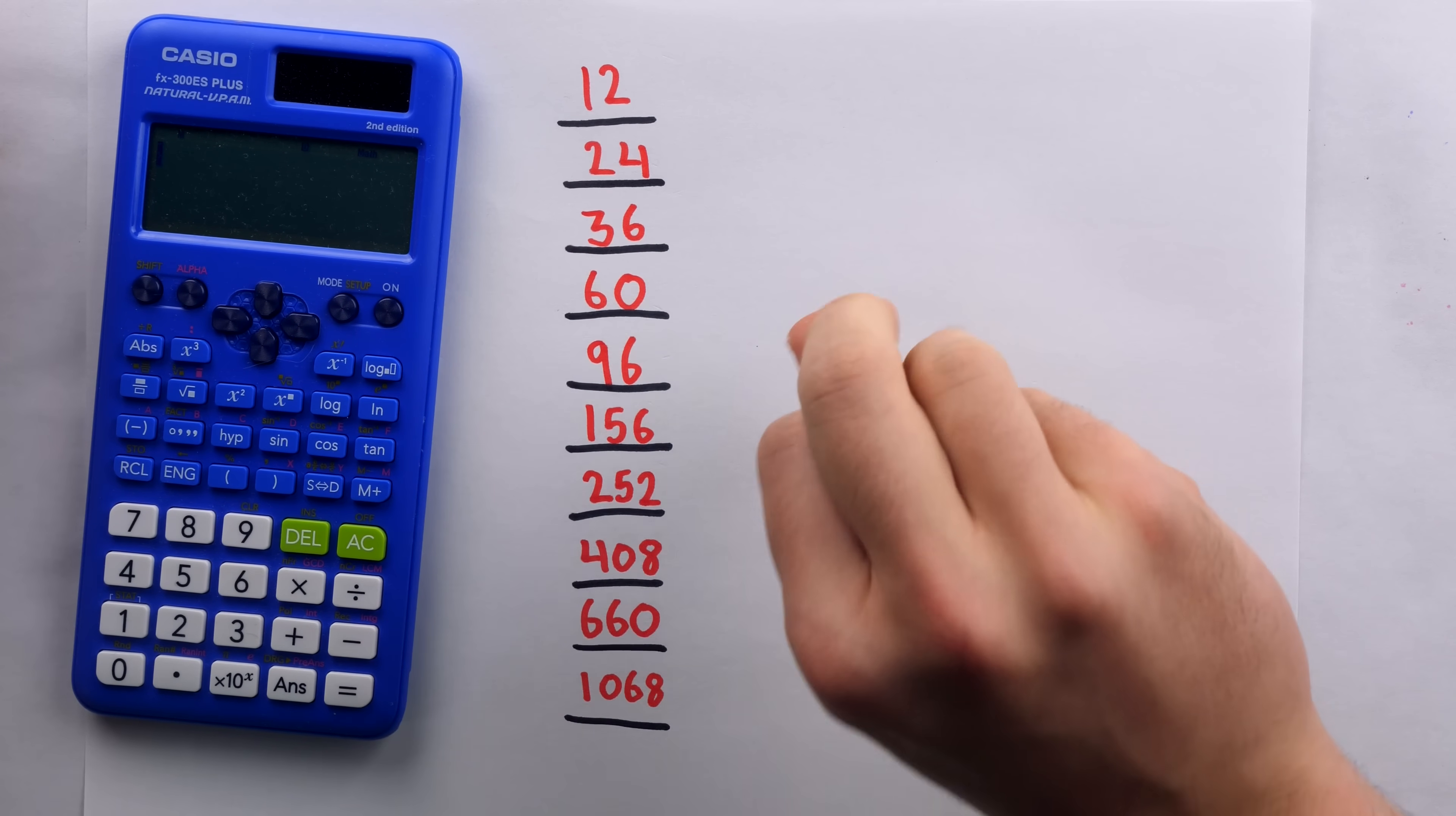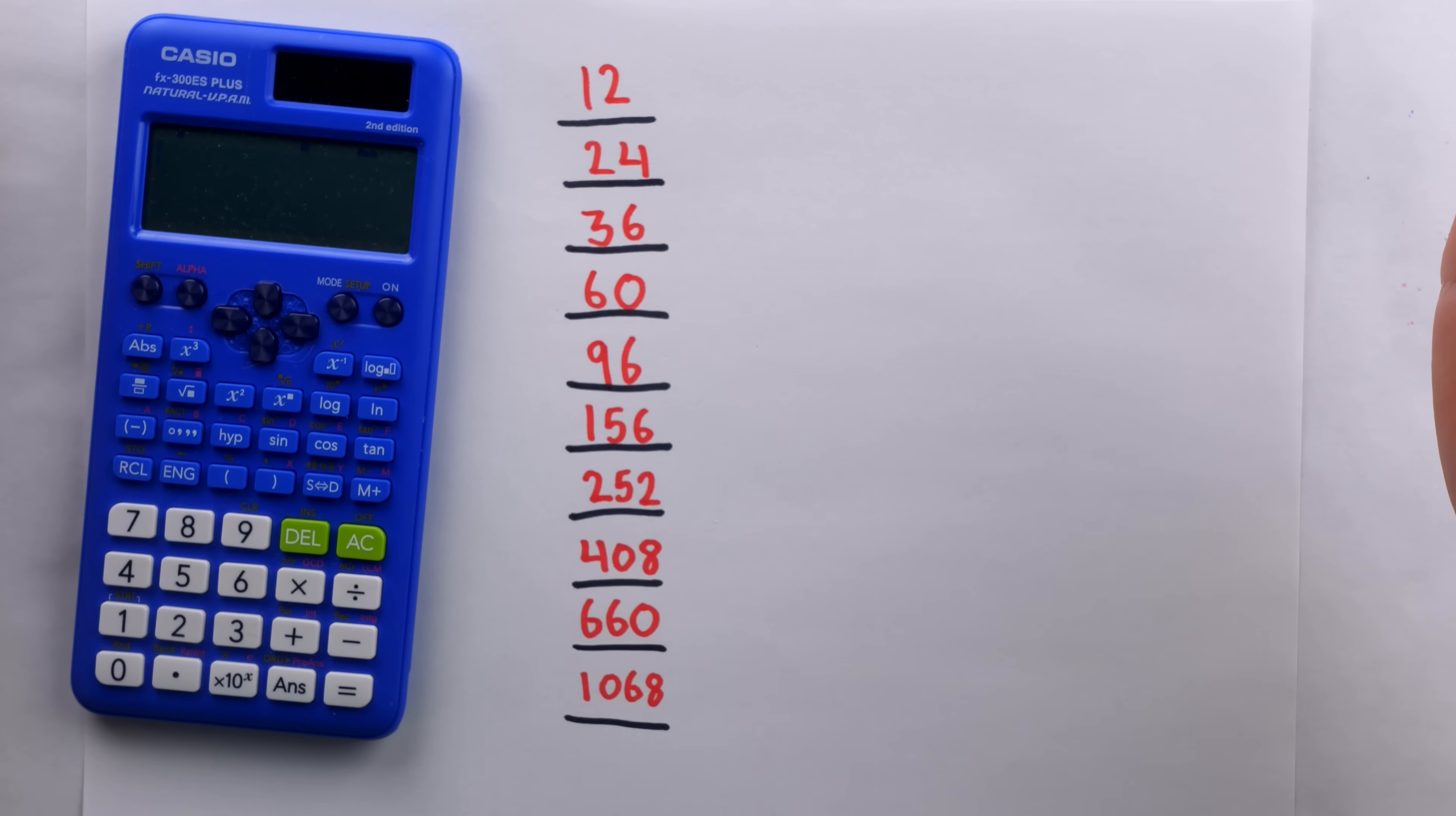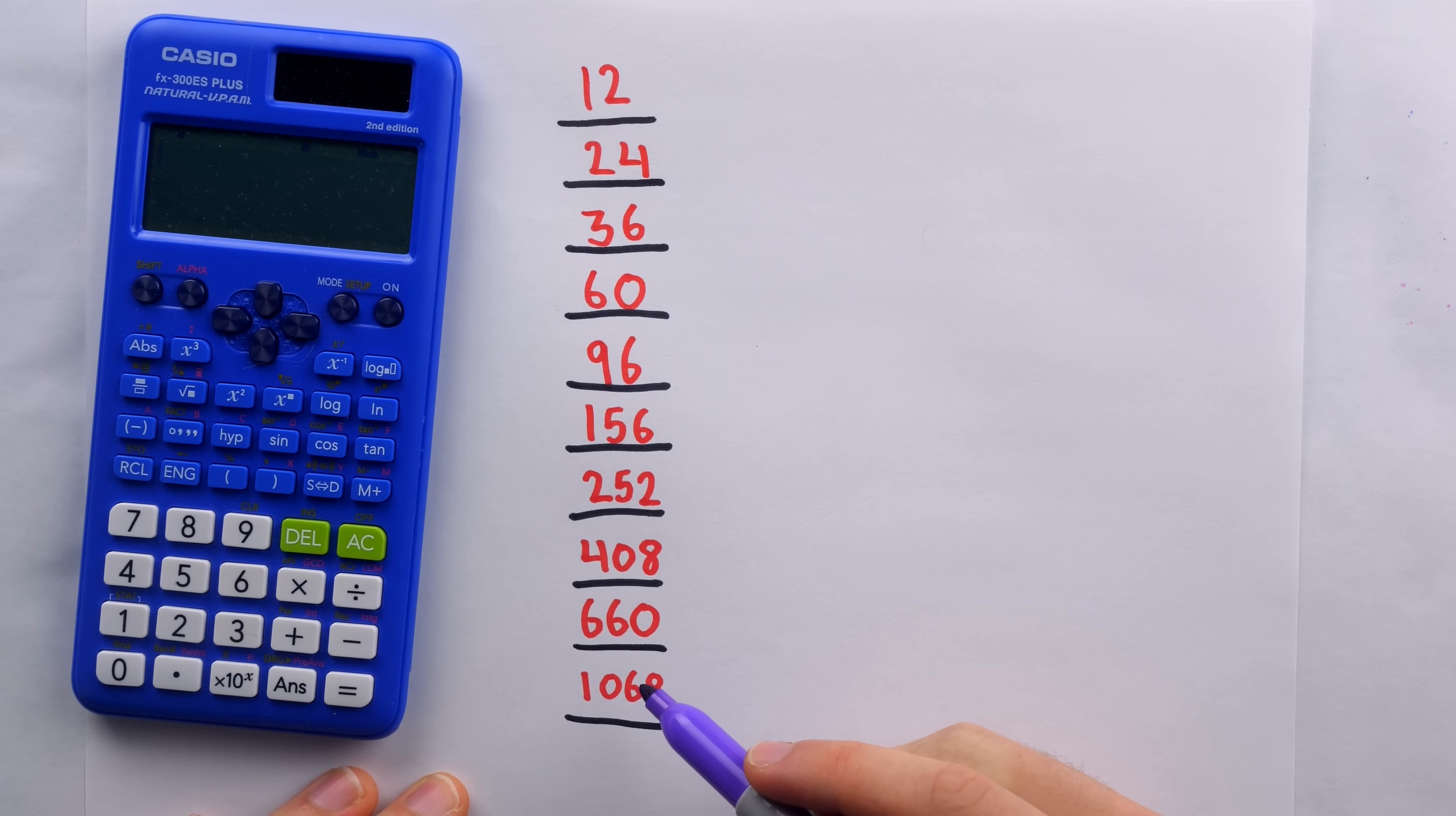This basically turns the trick into a sort of two for one because what's going to happen is you're going to look at the numbers, whether that means you're turning around or flipping over a paper. You're going to look at the numbers and you're going to be done looking at the numbers in like a second or two. So it's going to appear as if you've just memorized all 10 numbers super, super fast.